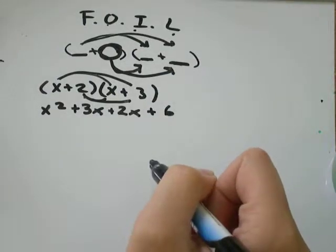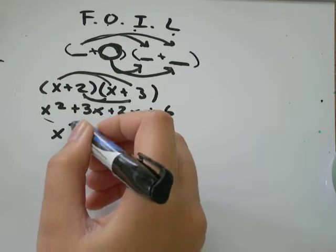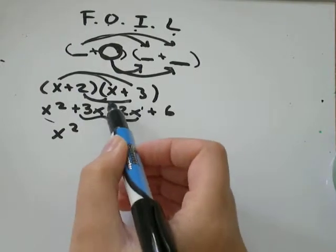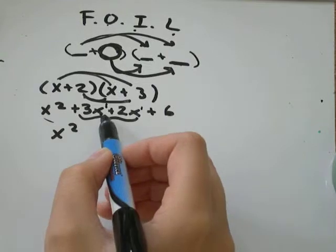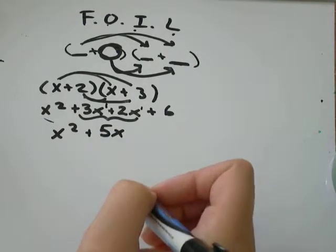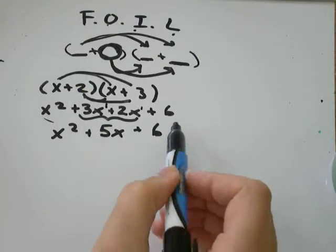Now, you need to collect like terms. I only have one that has x squared in it, but 3x and 2x, they both just have x to the power of 1, so I can simplify those. 3 of something plus 2 more of the same thing would just be 5 of the same thing plus 6. And that would be your final answer.